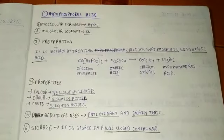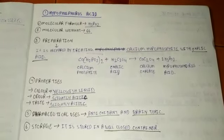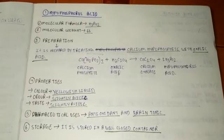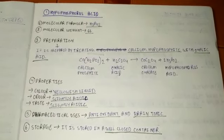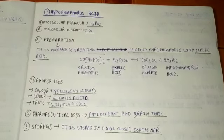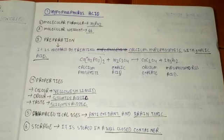Hello, my name is Ankit Singh. In this video, I'm going to discuss hypophosphorus acid. First, its molecular formula is H3PO2, and its molecular weight is 66.